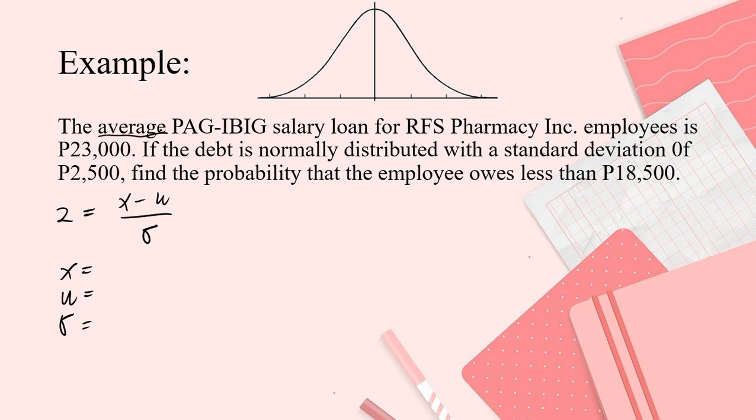What is it? It says average. So again, when we say average, that is the mean. So the average is P23,000 pesos. So since mean is P23,000 pesos, that's what we will put in the middle. And then, this is mean.